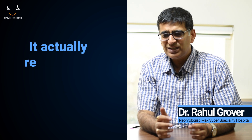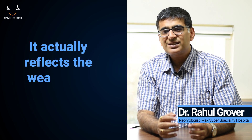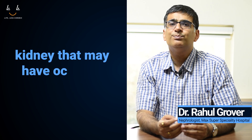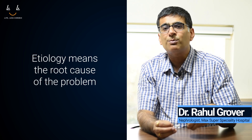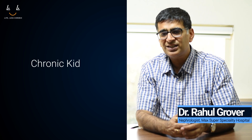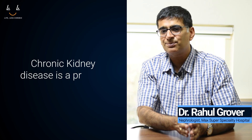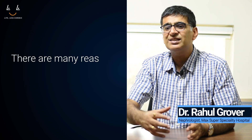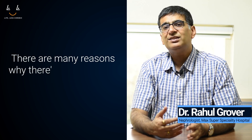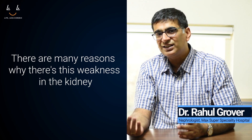Chronic kidney disease actually reflects a weakness of the kidney, and it could be due to many different etiologies. Etiology is what we say is causing the problem. So chronic kidney disease is a problem in the kidney which is persisting for more than three months, and there are many reasons why this weakness could occur.